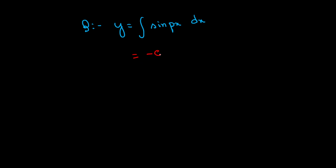So we can write: minus cos(px) divided by the coefficient of x, which is p, plus c.